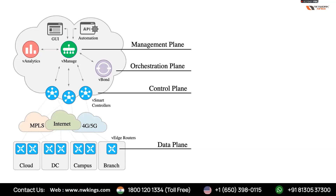In a traditional router there are three planes: management, control, and data. The data plane covers all ports and interfaces. The control plane runs routing protocols and learns routes. In SD-WAN, we open up the router and assign each role to a dedicated device.